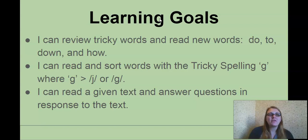Okay, we're going to review our previously learned words and learn some new words: do, to, down, and how. We're going to be able to read and sort words with a tricky spelling G because that tricky G has two different sounds. And then we're going to read a text and answer questions about that text.